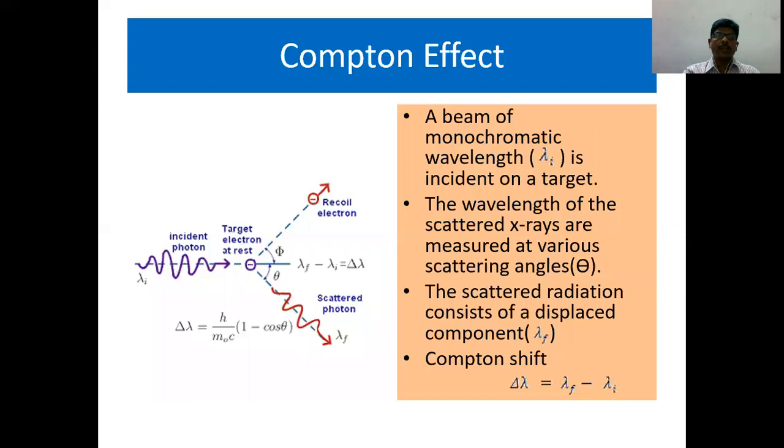This diagram shows the collision between a photon and an electron. The photon is a monochromatic photon of wavelength lambda I which comes and strikes an electron at rest in the target. The target is a graphite block. It is an elastic collision between the photon and the electron.